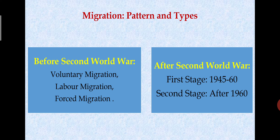Labor migration flowed from Europe to destinations like the US, Canada, Australia, New Zealand, and South Africa. There were both pull and push forces involved. There were also migrations in Europe related to Catholic missionaries. In Latin America, these people settled in large numbers.